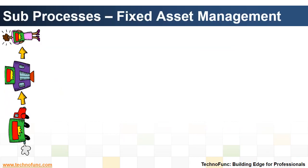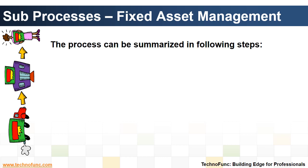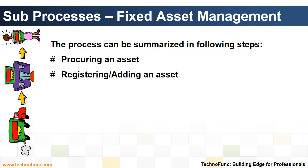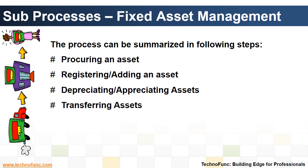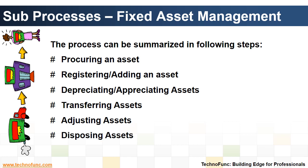Sub-processes under the fixed assets functional area. The process for fixed assets can be summarized in the following steps: procuring an asset, registering or adding an asset, depreciating or appreciating assets, transferring assets, adjusting assets, and disposing assets.